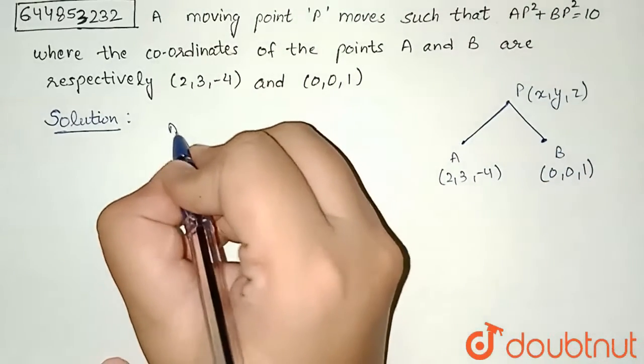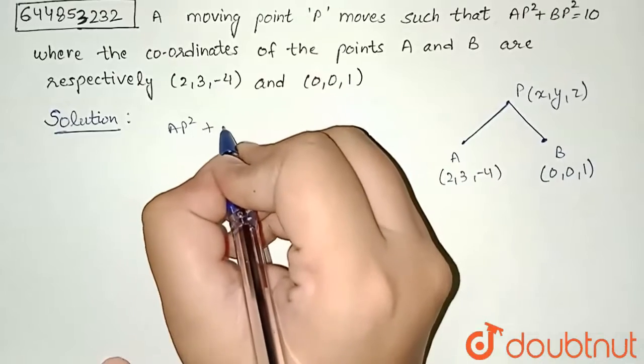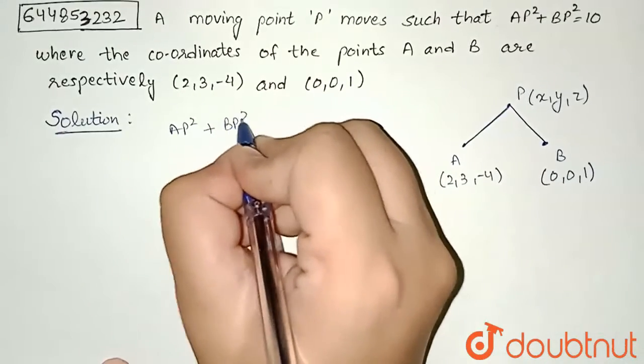Let me apply this here. So, AP² + BP² = 10.